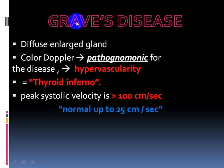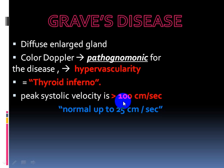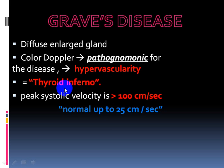Now let's speak about diffuse thyroid disease. Graves' disease is a diffuse enlargement of the thyroid gland. On color Doppler, the pathognomonic sign to diagnose Graves' disease is hypervascularity of the gland, called the 'thyroid inferno' — inferno meaning fire within the gland. The peak systolic velocity of the gland is more than 100 cm/s, while the normal gland vascularity does not exceed 25 cm/s.